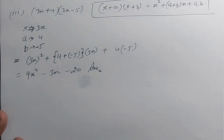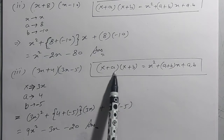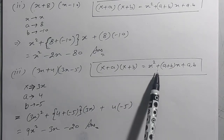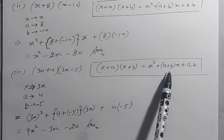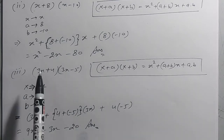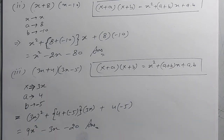देखो ध्यान से — तीनों questions में यह ही identity लगी है: (x + a)(x + b) = x² + (a + b)x + ab. इसे अच्छी तरह याद करो और पहचानो कि कब और किस तरह के questions में यह identity लगती है।